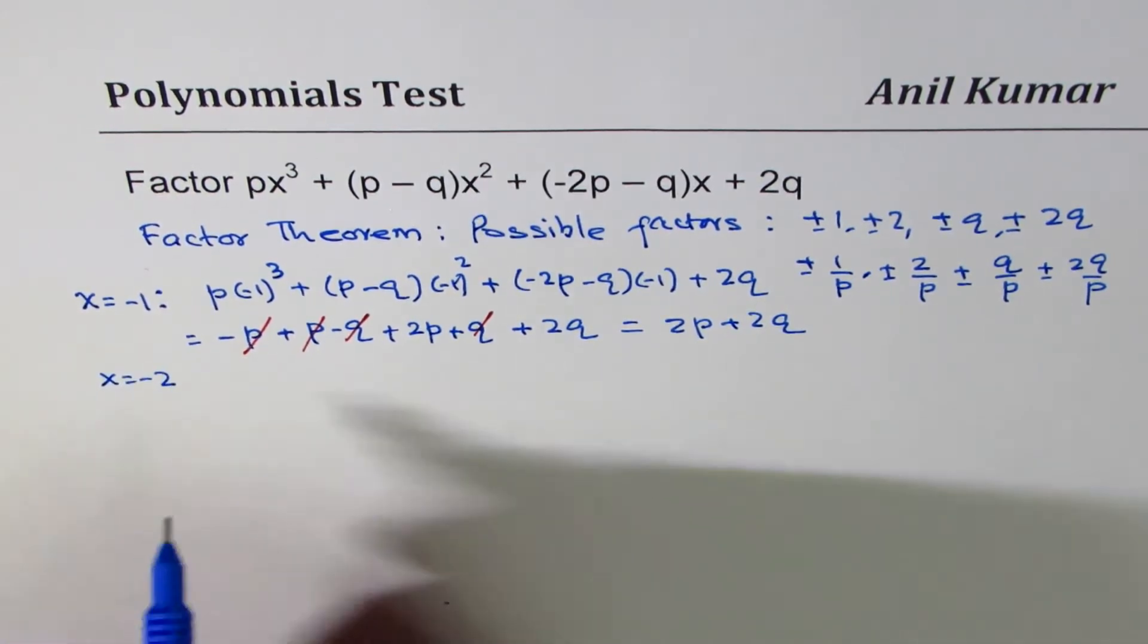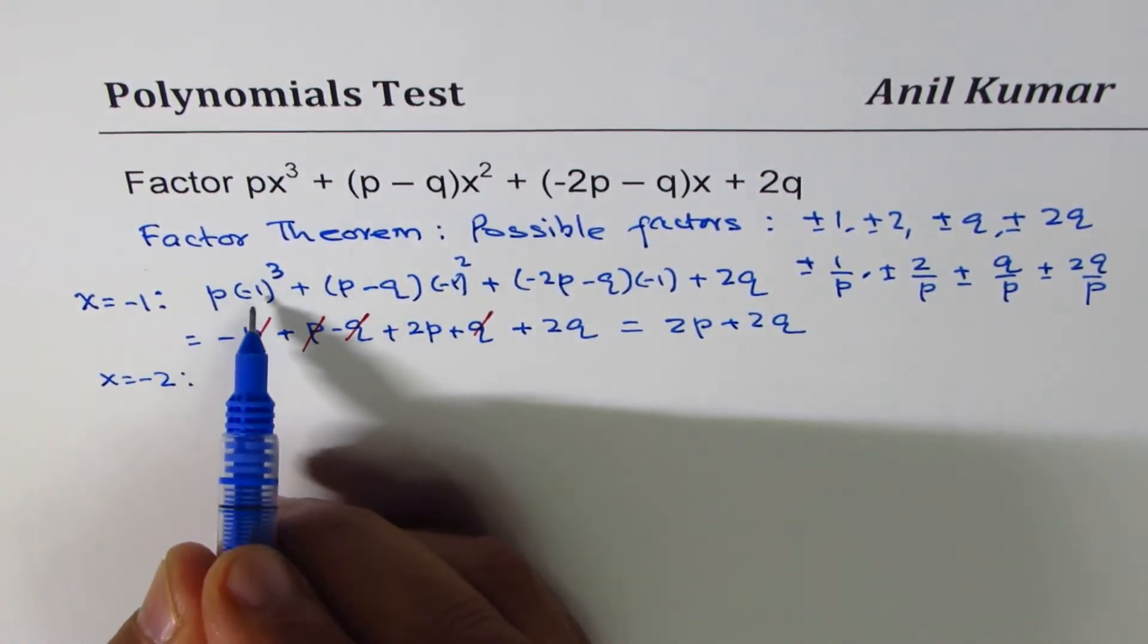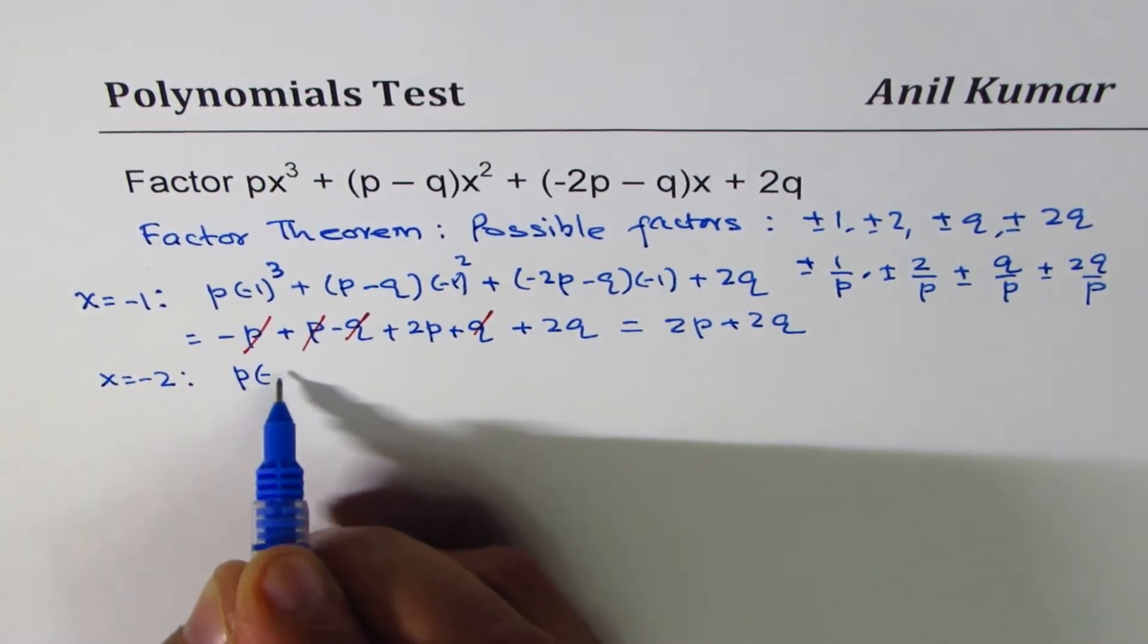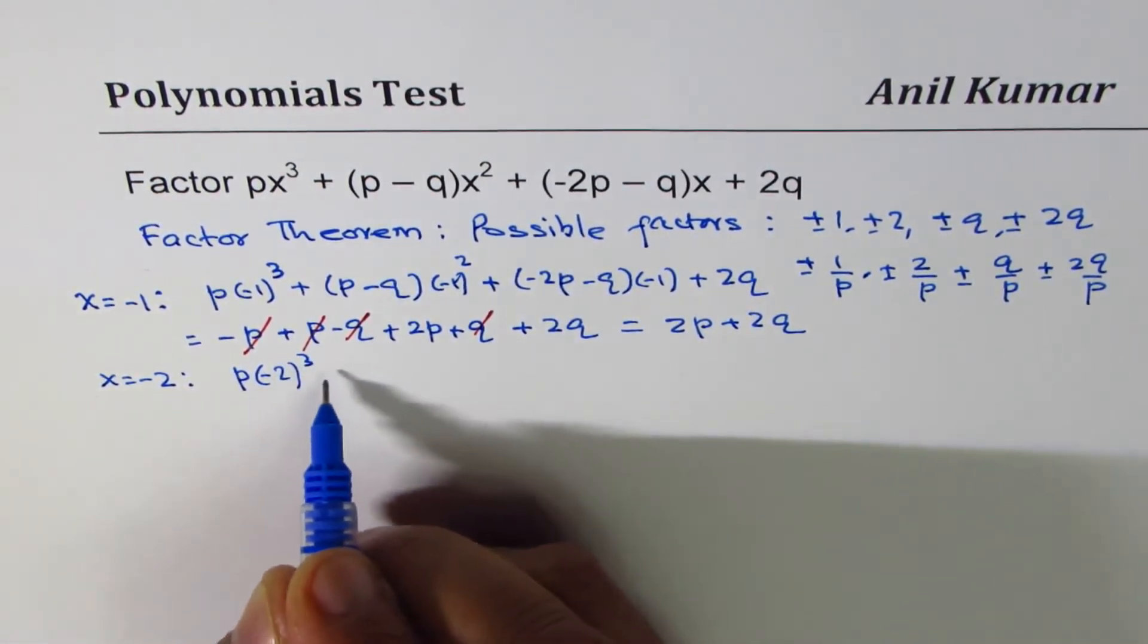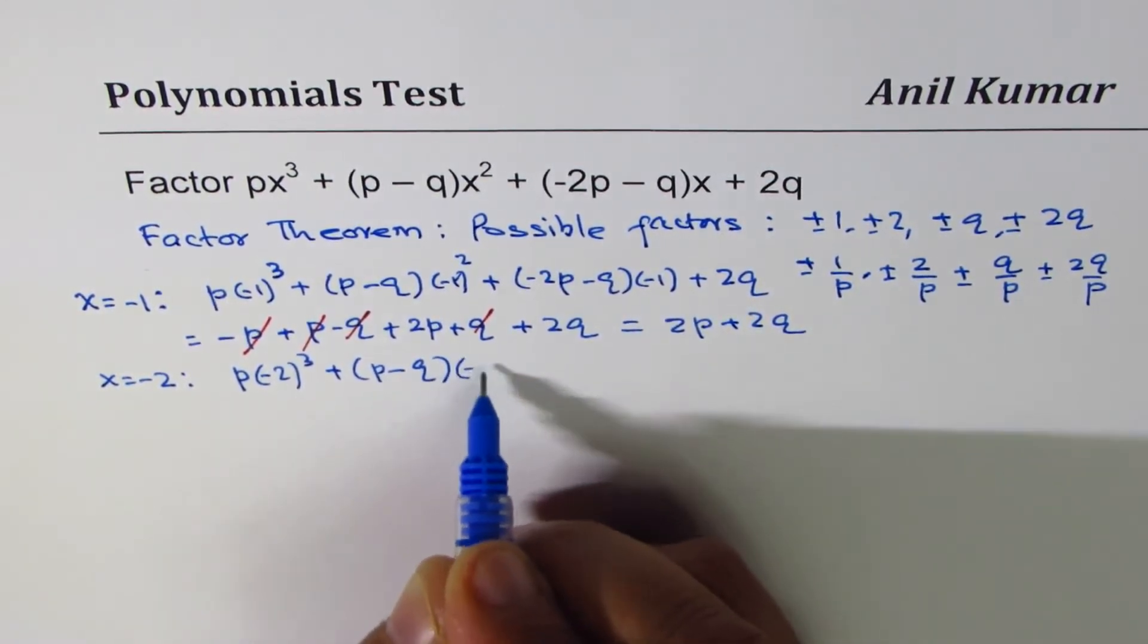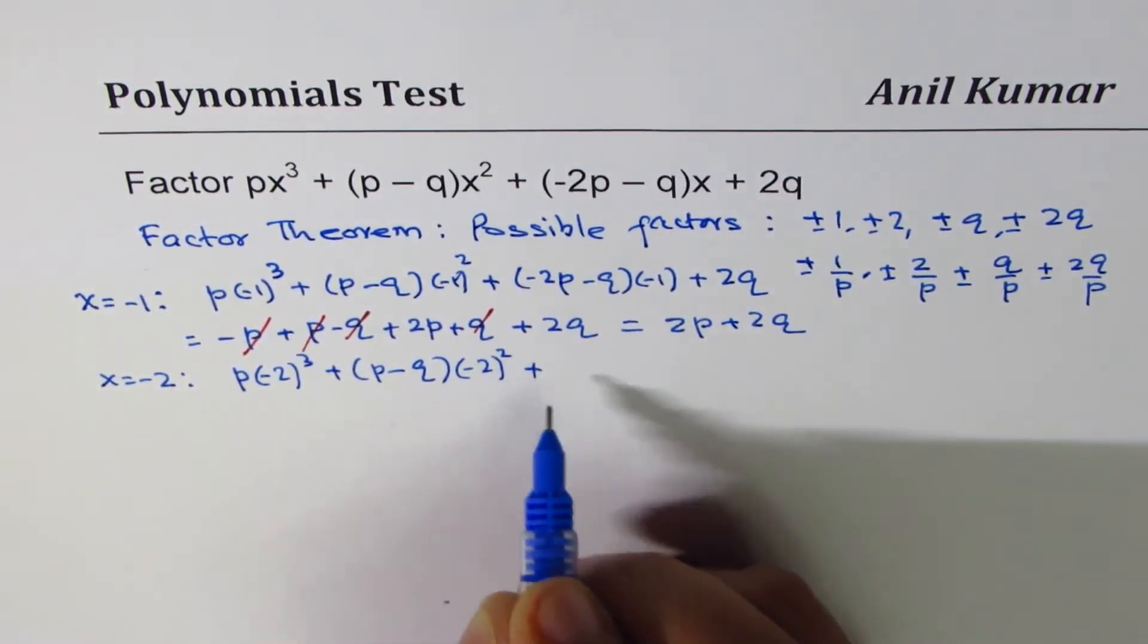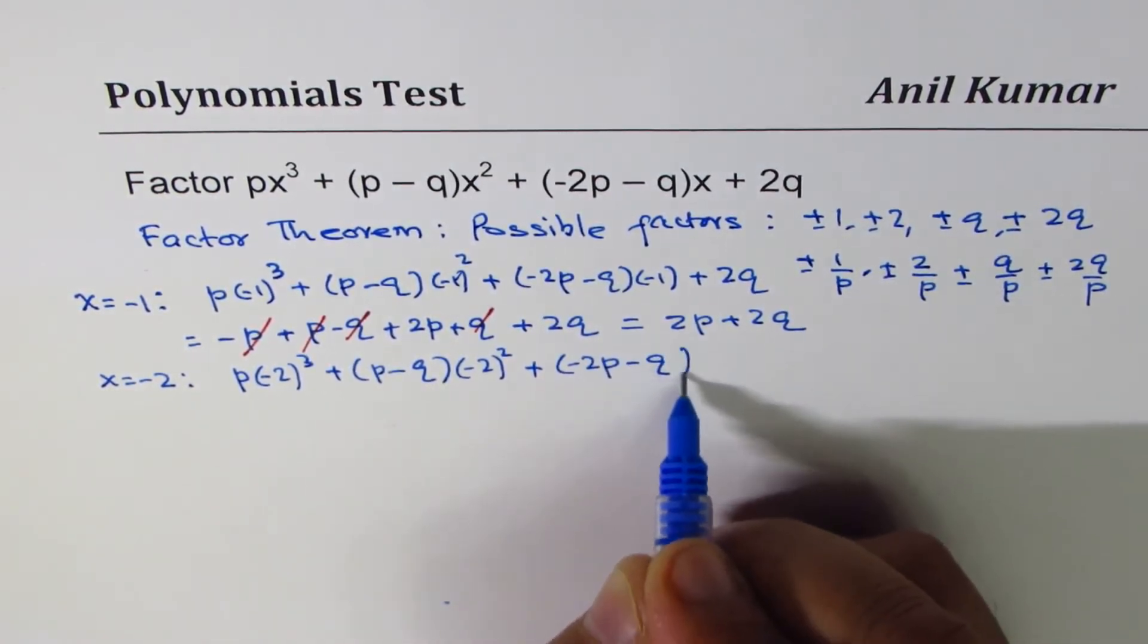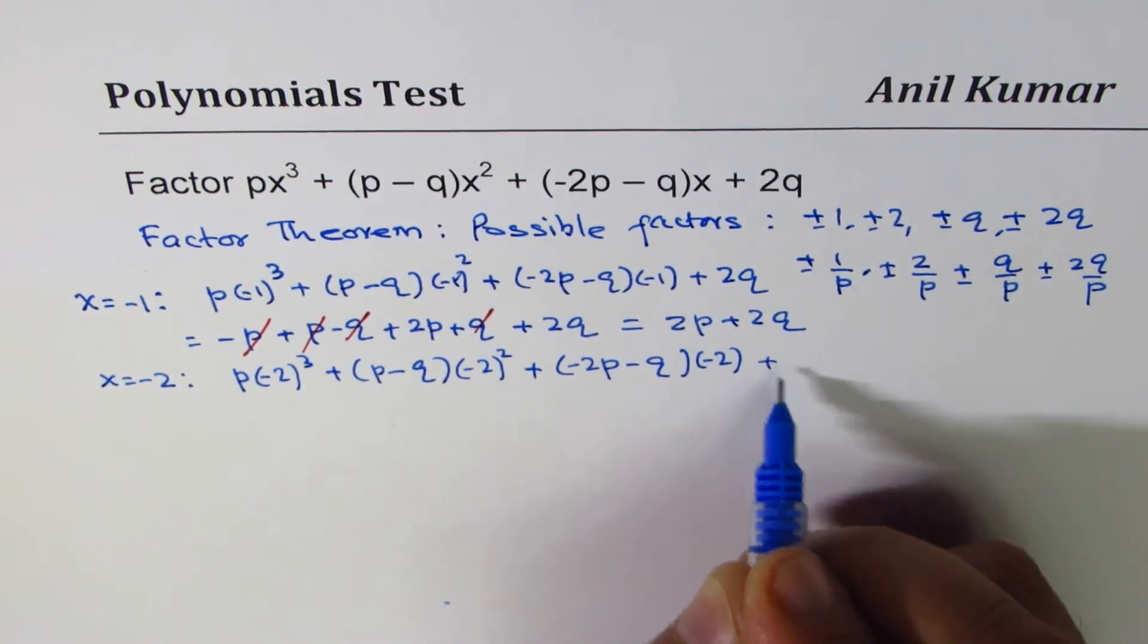Let's try x = -2. So if I try x = -2, I get p(-2)³ + (p - q)(-2)² + (-2p - q)(-2) + 2q.